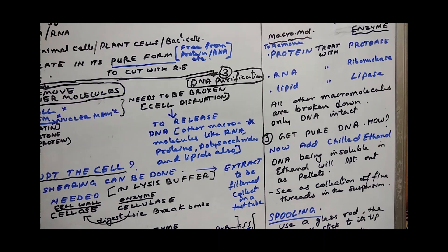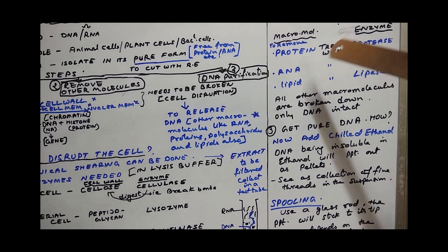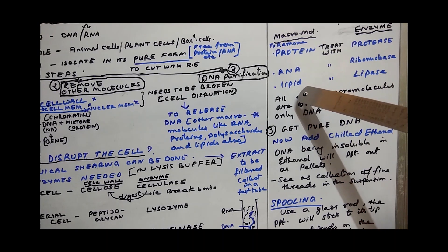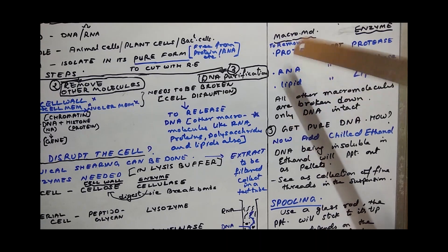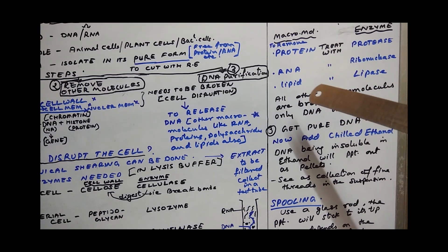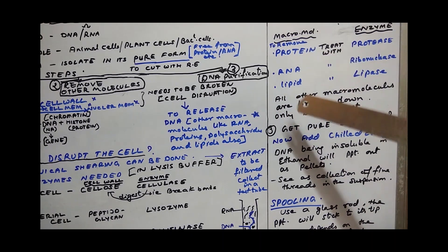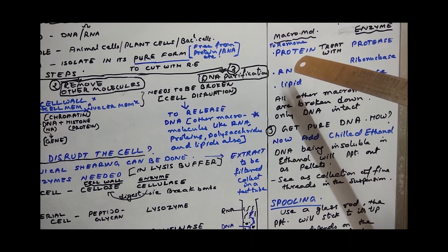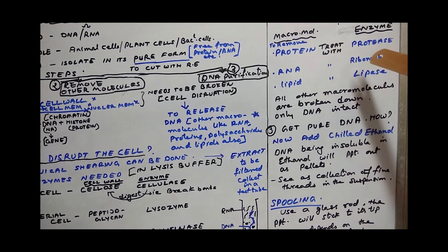After all the macromolecules are released, the next step - we want only the DNA for our further experimental purpose because DNA contains the gene of interest. Contaminants here are the other macromolecules - protein, RNA, and lipid. These should be digested, broken down. We don't want them. To remove protein, you treat it with enzyme protease. Protease will digest the long proteins into individual amino acids.